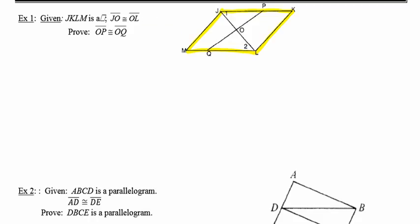The other piece of given information is that segments JO and OL are congruent, so I'll mark those. My goal is to prove that segment OP is congruent to segment OQ. Since I'm trying to prove a pair of congruent segments, I'm thinking that if I can show a pair of triangles containing those segments are congruent, I can use CPCTC to prove the segments themselves.